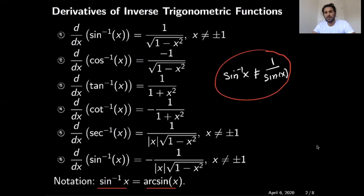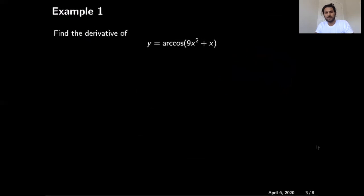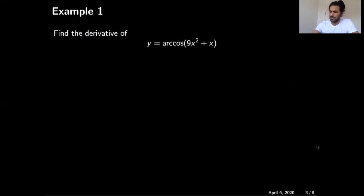This list is long and we have to memorize it somehow, but the best way to memorize any formula in mathematics is to practice the formula with various examples. Let's consider some examples and practice these rules. I have the first example: I want to calculate the derivative of arc cosine of 9x squared plus x, which is the same as cosine inverse of 9x squared plus x in a different notation.